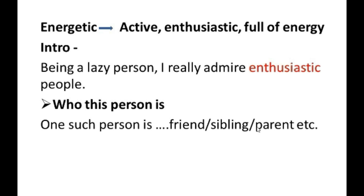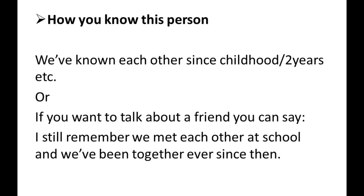The person could be anyone — your friend, sibling, or parents. Our next cue is how you know this person. For this you can use two different approaches: you can simply say "we've known each other since childhood" if you're talking about a sibling or cousin, or if you're talking about a friend you can say two years or so. You can also make it longer by adding: "I still remember we met each other at school and we've known each other ever since."